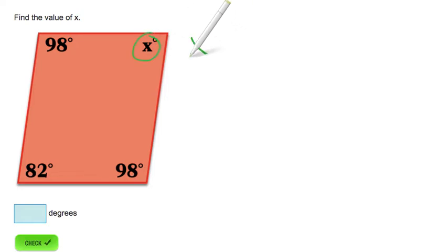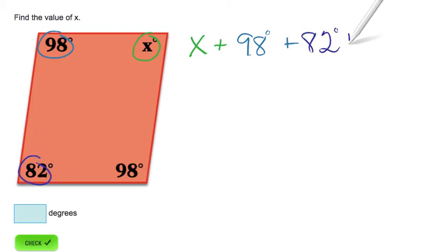We are going to start with our value of x plus 98 degrees plus 82 degrees plus 98 degrees again, and the sum of all four of these angles will equal 360 degrees.